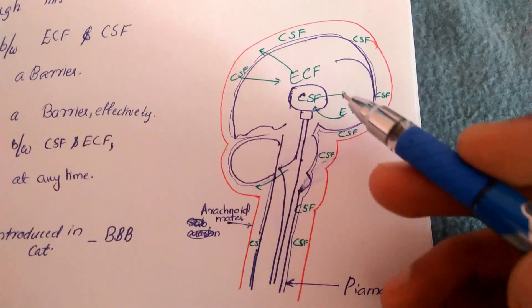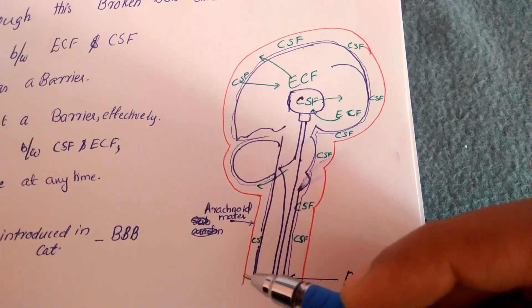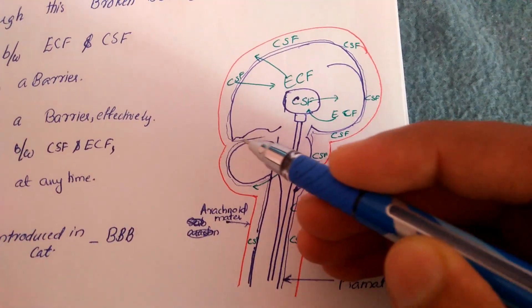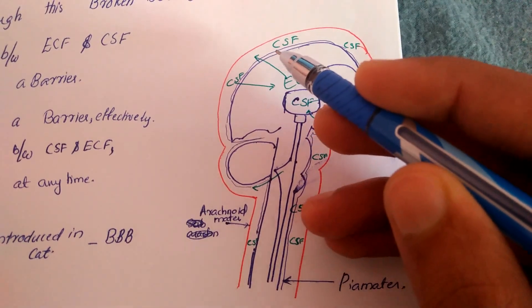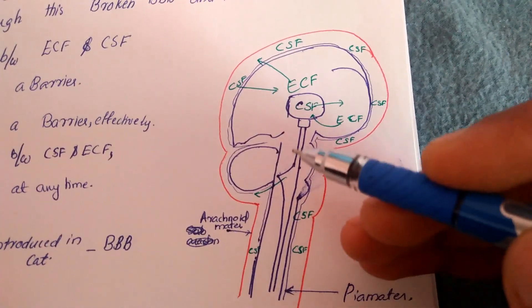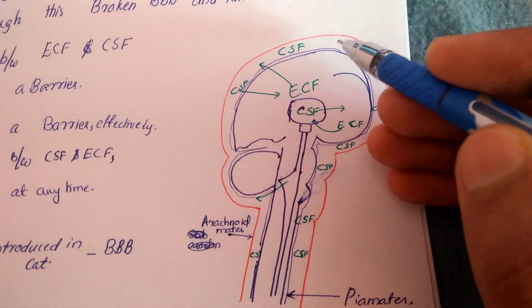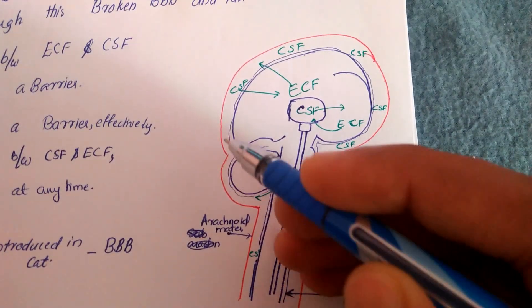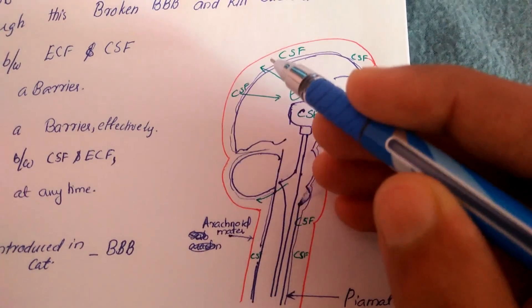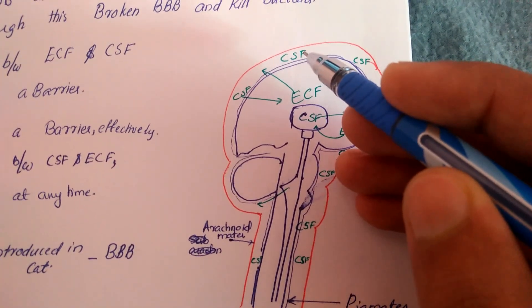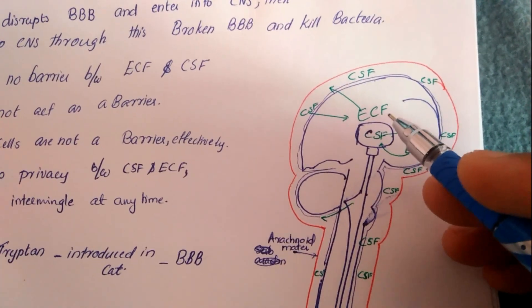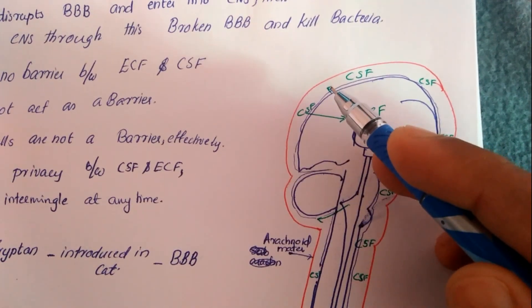Here is our central nervous system. We have the pia mater — a small, very thin, delicate lining — which does not act as an effective barrier. We have cerebrospinal fluid in the subarachnoid space. The subarachnoid space contains cerebrospinal fluid, which can easily enter into the brain, and extracellular fluid can enter into the subarachnoid space as well.